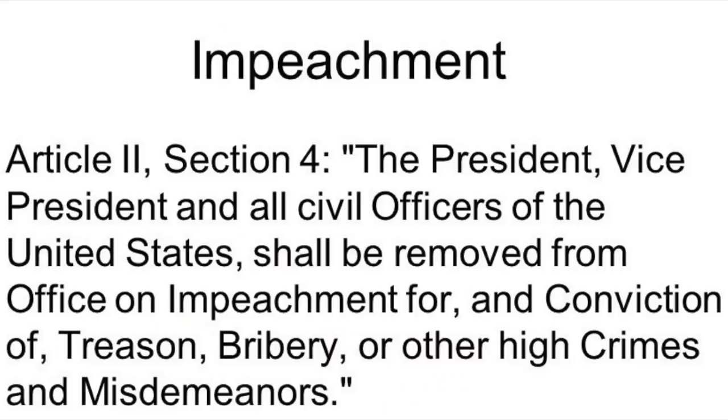The actual constitutional language for what it takes to get impeached is in Article 2, the executive section, Section 4. Let's read that right now: 'The President, Vice President, and all civil officers of the United States shall be removed from office on impeachment for, and conviction of, treason, bribery, or other high crimes and misdemeanors.' So it's pretty clear — it has to be treason, bribery, or high crimes and misdemeanors.